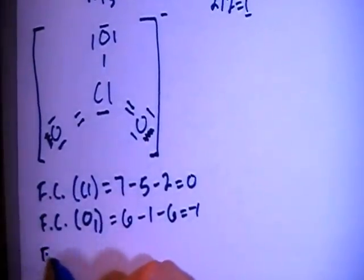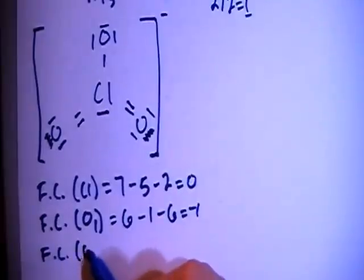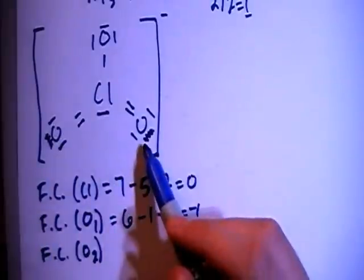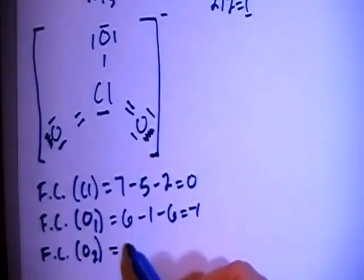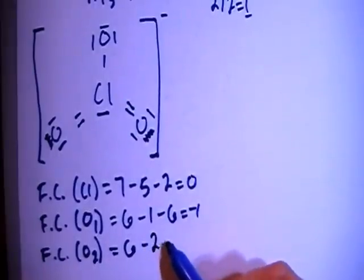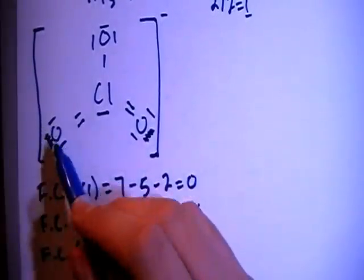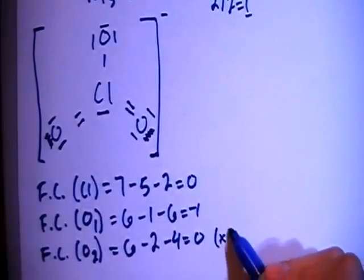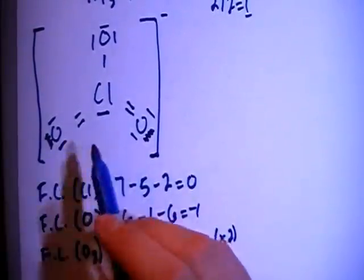And now let's do the formal charges of the oxygens with a double bond, so O sub 2. And that's going to be both this oxygen here and this oxygen here. So that's going to be 6 valence brought in minus 2 bonds for each one minus 4 non-bonding, 1, 2, 3, 4, for each oxygen for a formal charge of 0. And we times that times 2 because there's 2 oxygens with double bonds.